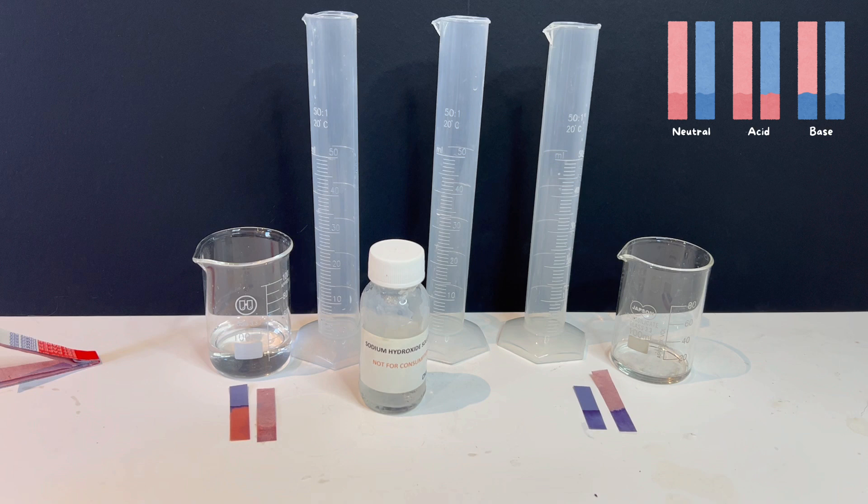So what have we learned? Acids like vinegar turn blue litmus red, while bases like sodium hydroxide turn red litmus blue. If there is no color change, the substance is either already showing that side of the indicator or it is neutral. This simple test is a quick and reliable way to identify whether a solution is acidic or basic. Don't miss our next lesson. See you in the next video.